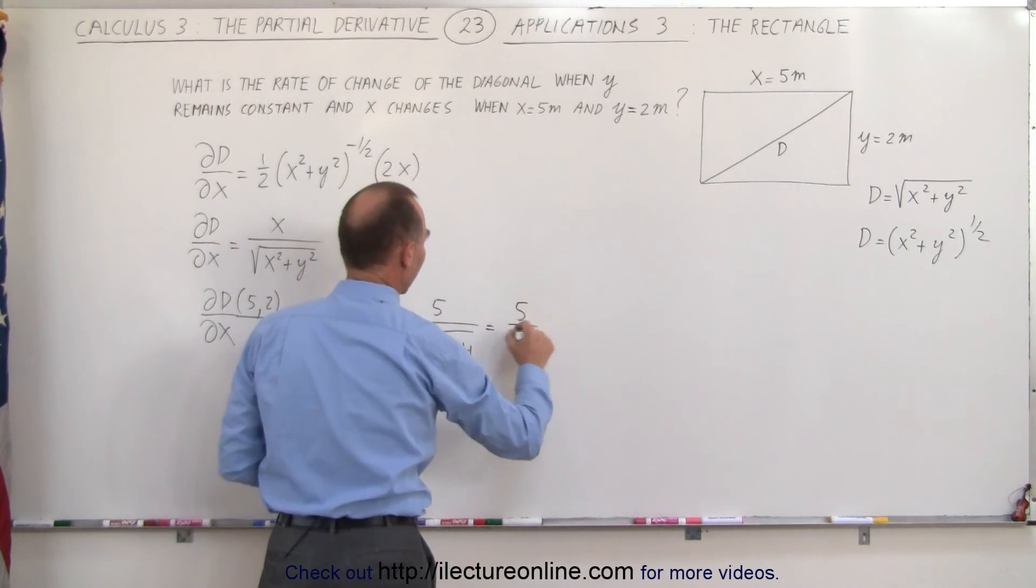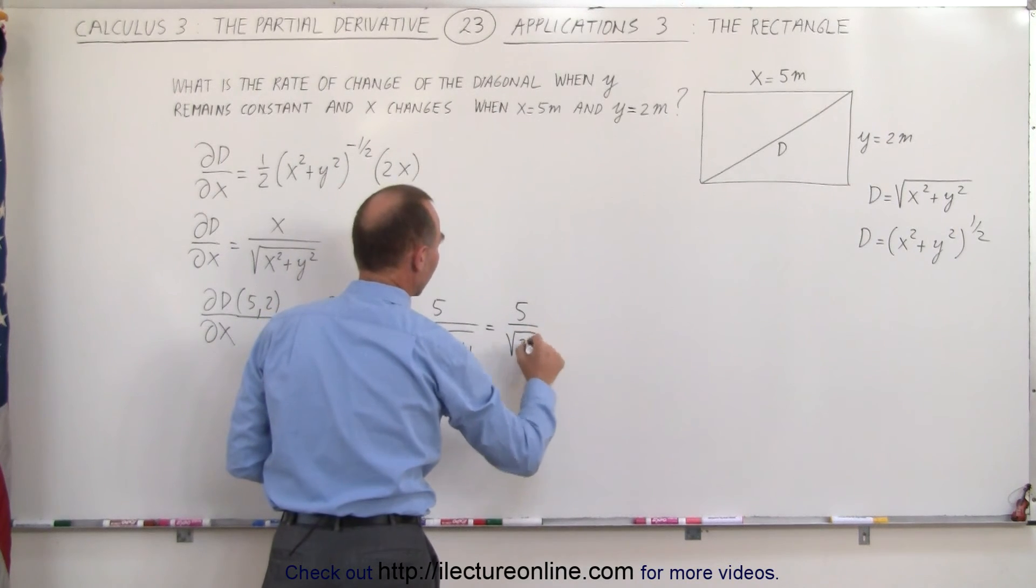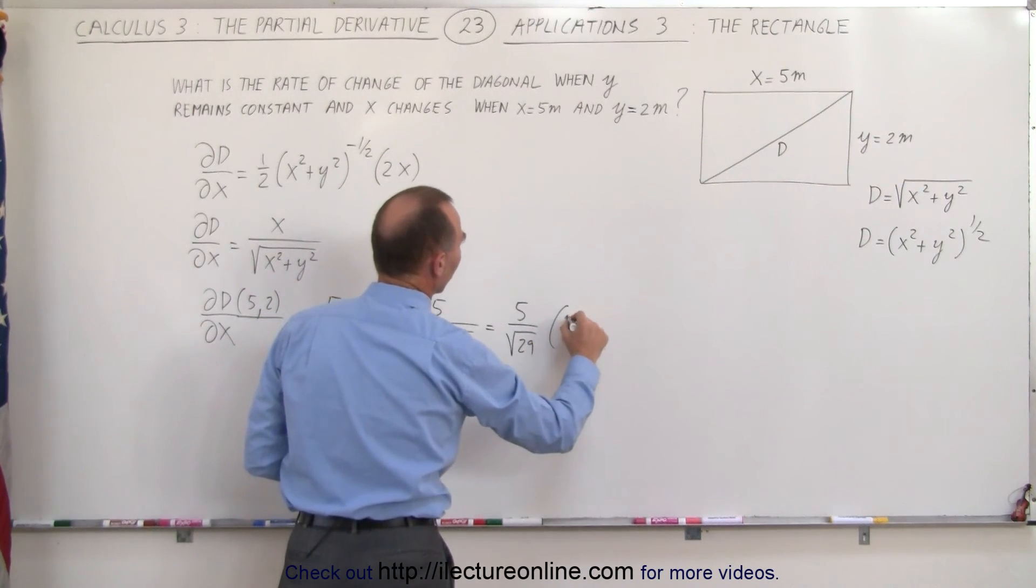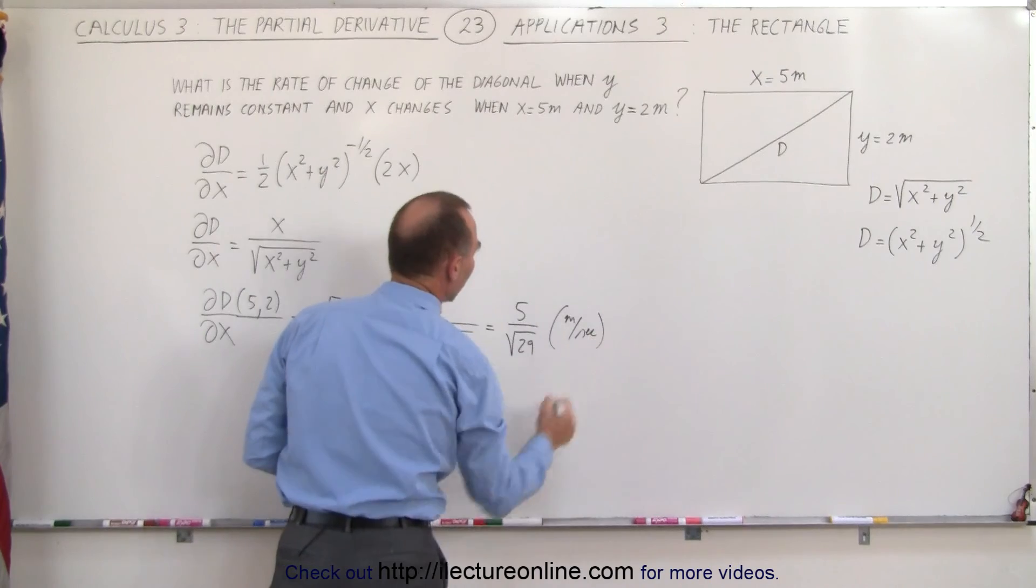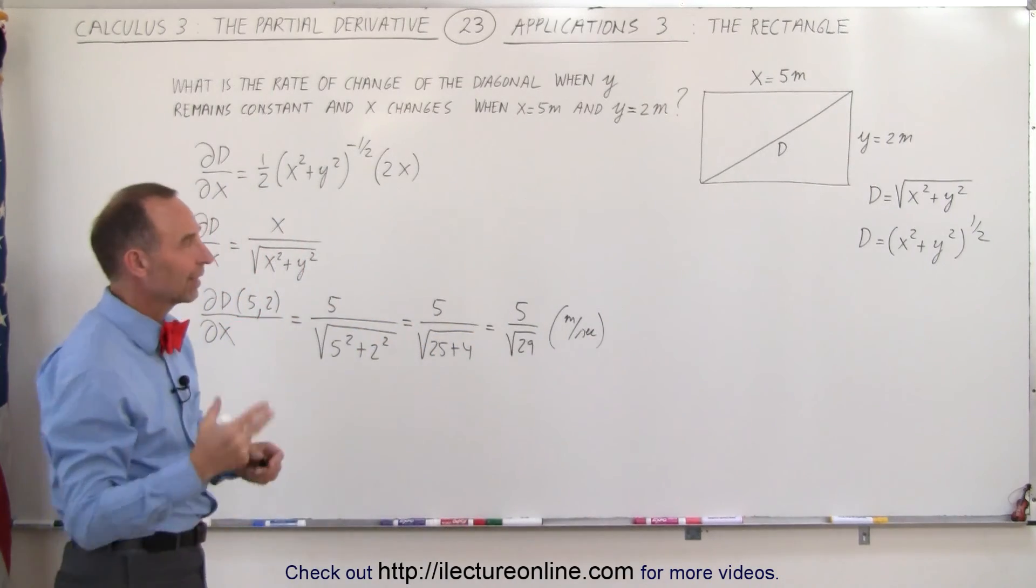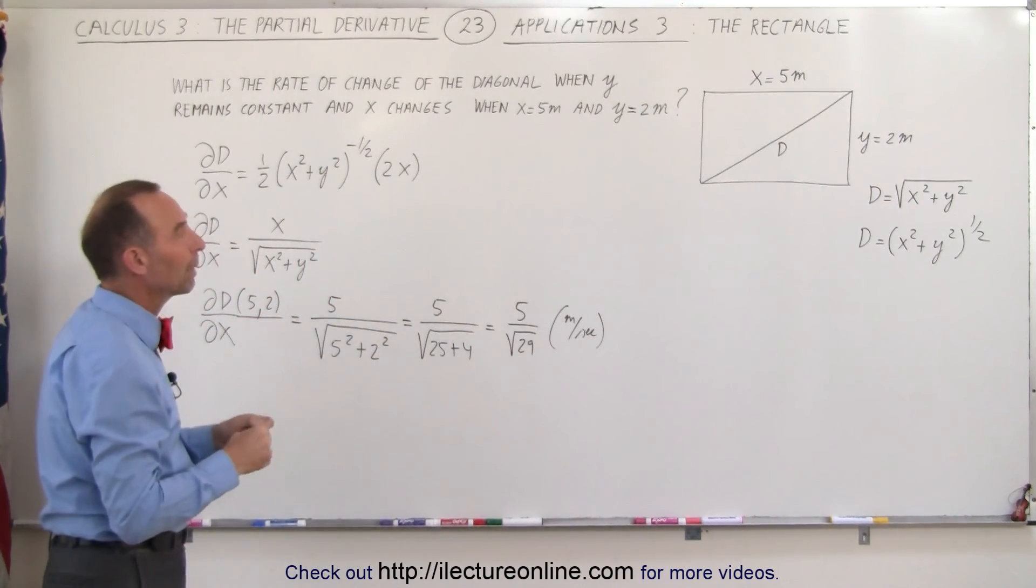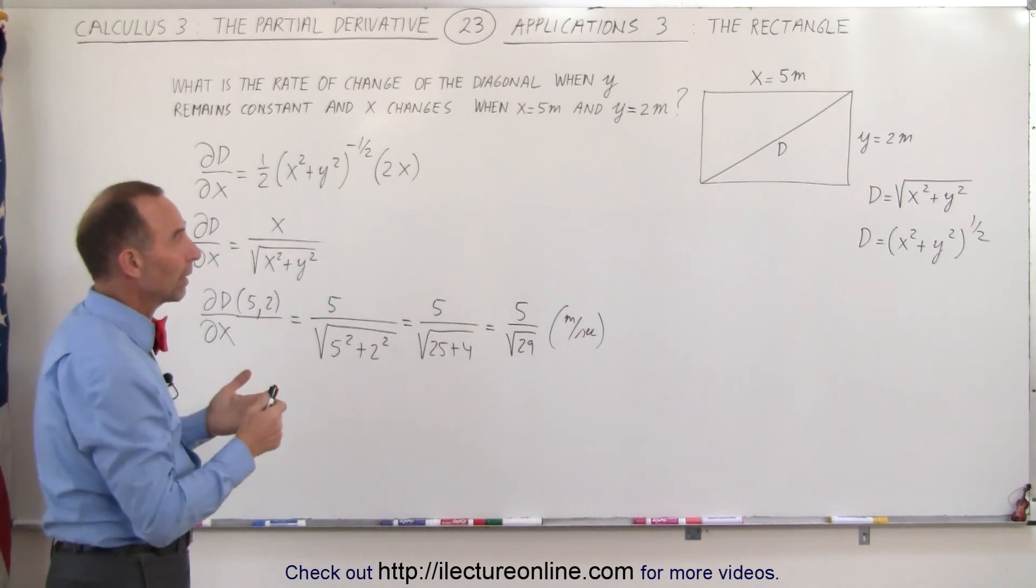which is equal to 5 divided by the square root of 29. And of course that would be in terms of meters per second, because that's the rate of change of the length of diagonal with respect to x,